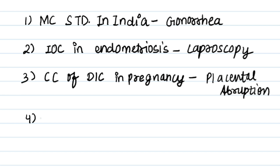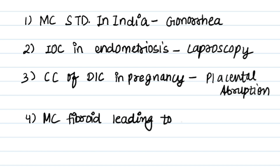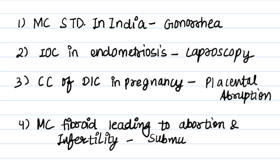Next point: the most common fibroid leading to abortion and infertility is submucous fibroid. Next point: the sample for Pap smear is taken from the posterior wall of vagina.